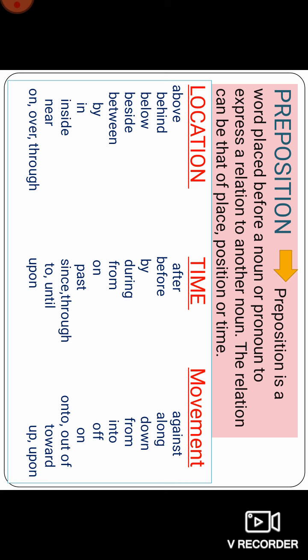Prepositions have three basic types. The relation can be that of place, position, or time — time like 'when', place like 'where', direction like 'how'. As you can see on the slide, the three categories are: location, time, and movement.